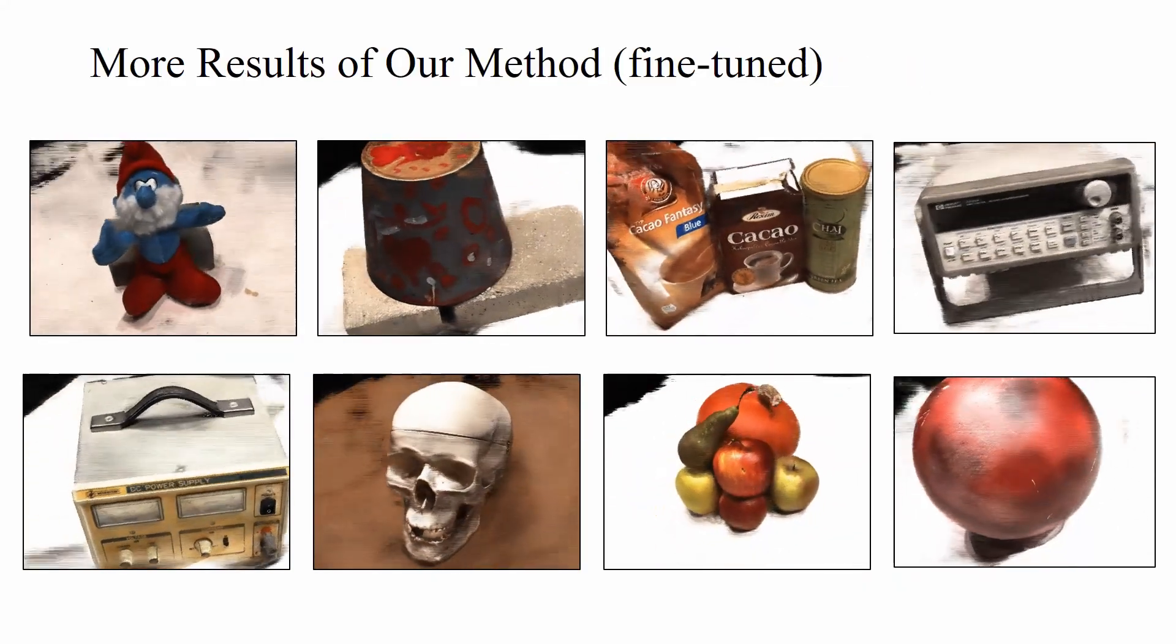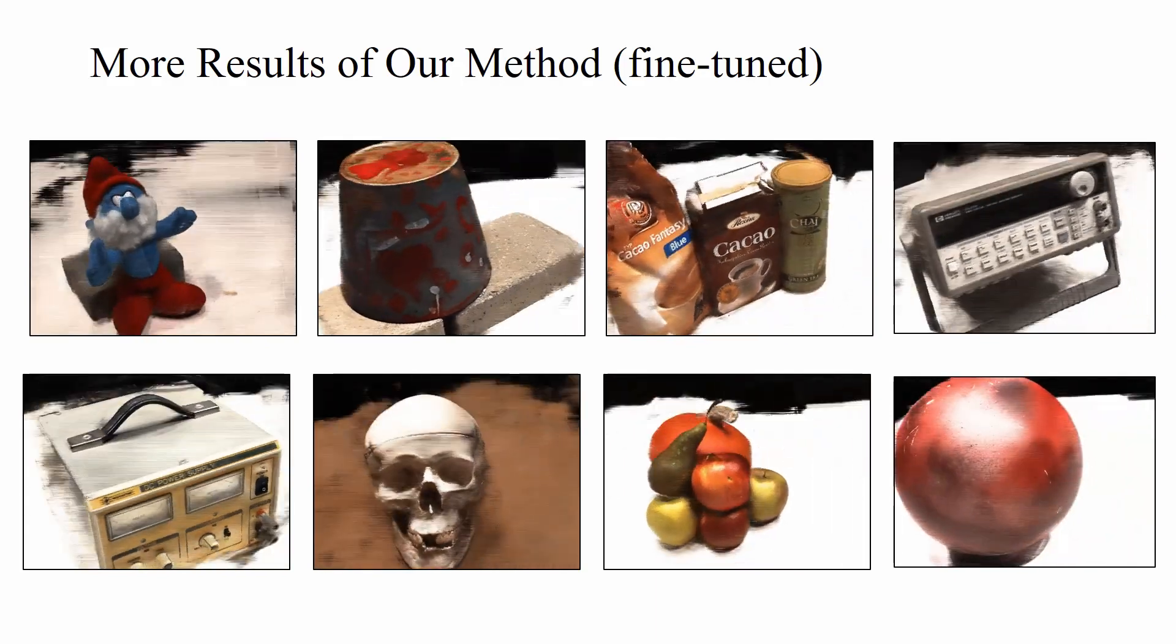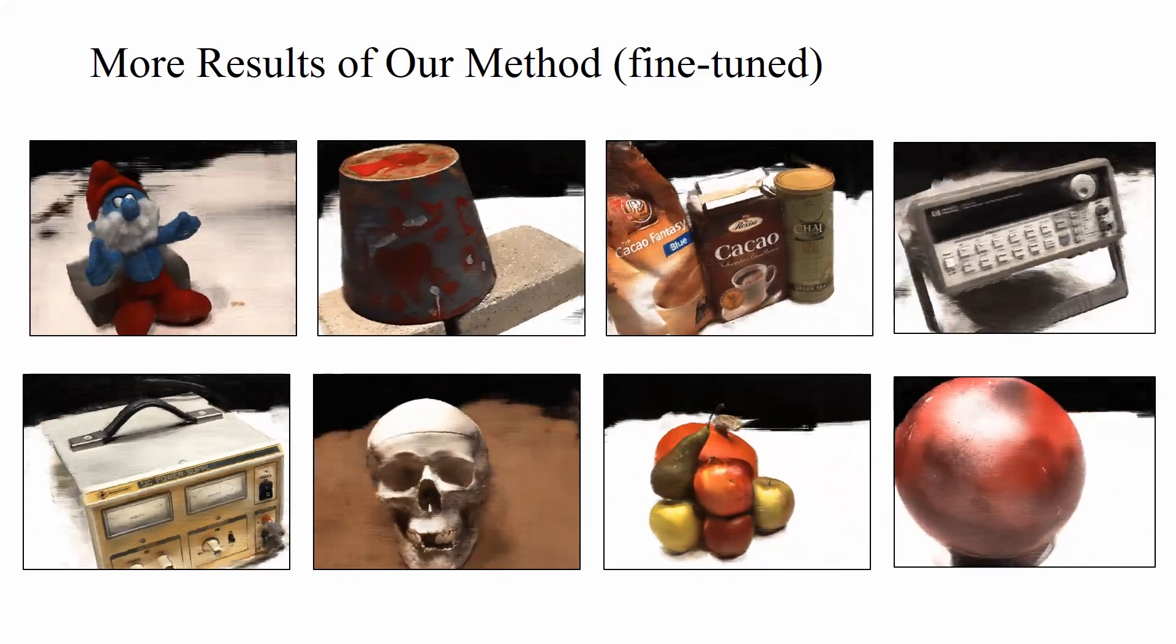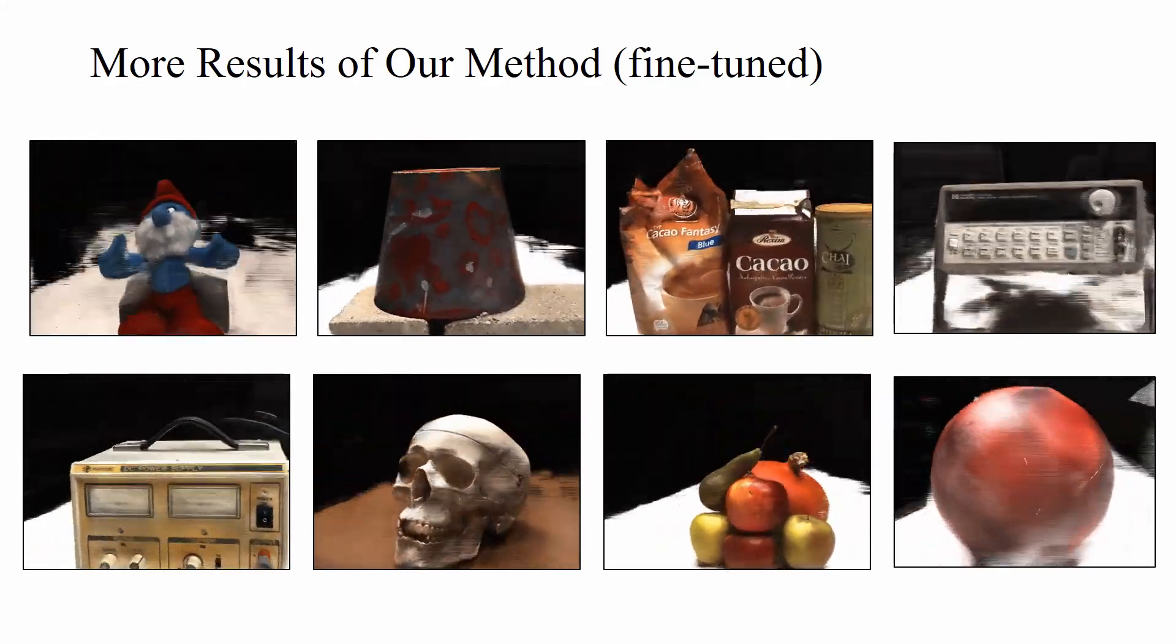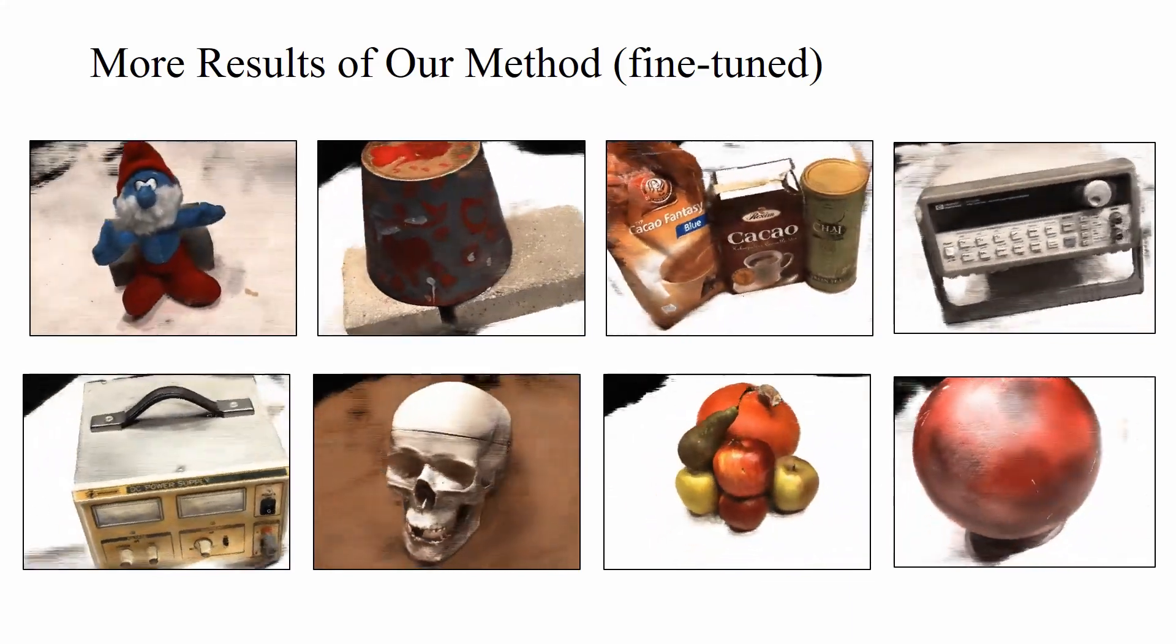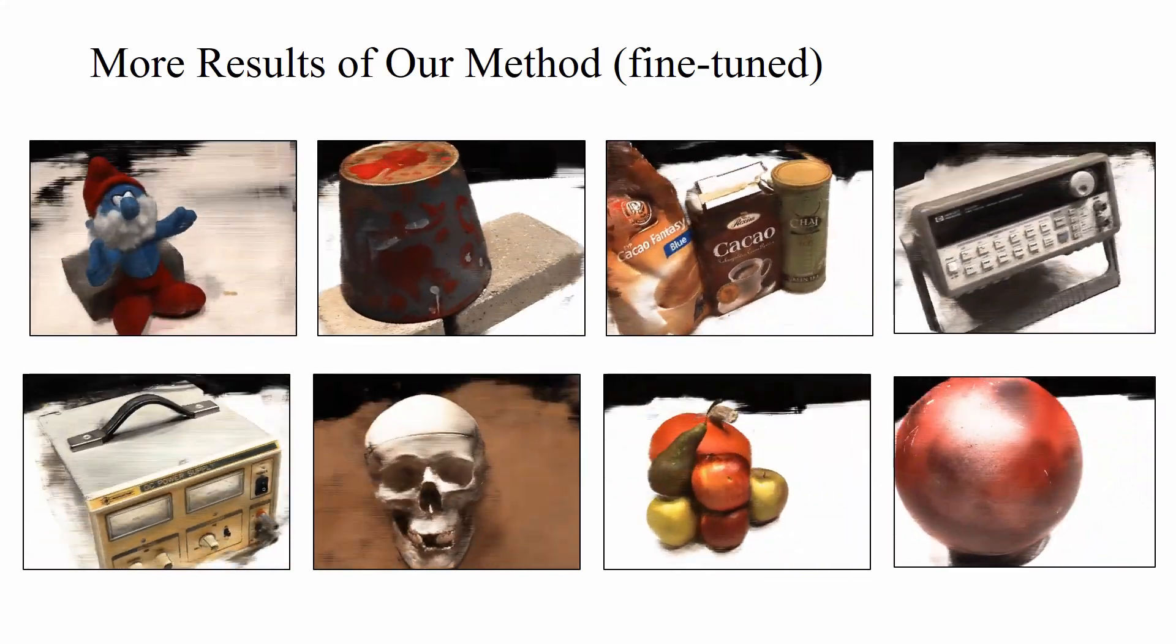We found the same Stereo Radiance Field model is able to render a large variety of scenes. Our method produces high-quality results in geometry and appearance, such as letters on the cocoa powder, the teeth of the skull, or the texture of a pear and an apple.